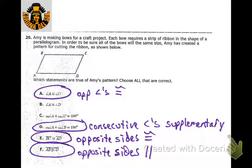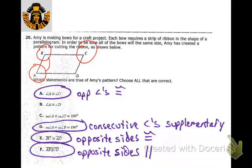This is a parallelogram, so we're looking for things that are true. We'd say angle A is congruent to angle C — they're opposite angles, they're congruent. We also have consecutive angles that are supplementary. BC is congruent to AD — opposite sides are congruent. And AB is parallel to CD because opposite sides are parallel.